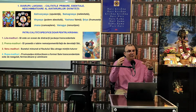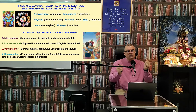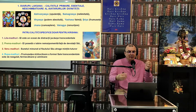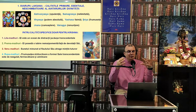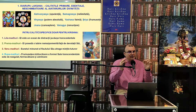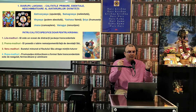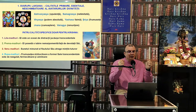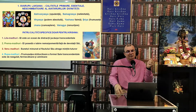A patra calitate pe care o posedă Persoana Supremă se numește Rupa Madhuri — frumusețea strălucitoare a formei sale transcendentale este de neegalat, foarte fermecătoare și uluitoare pentru toate entitățile vii mobile și nemișcătoare din cele trei lume. Așa descriu Scripturile Vedice.